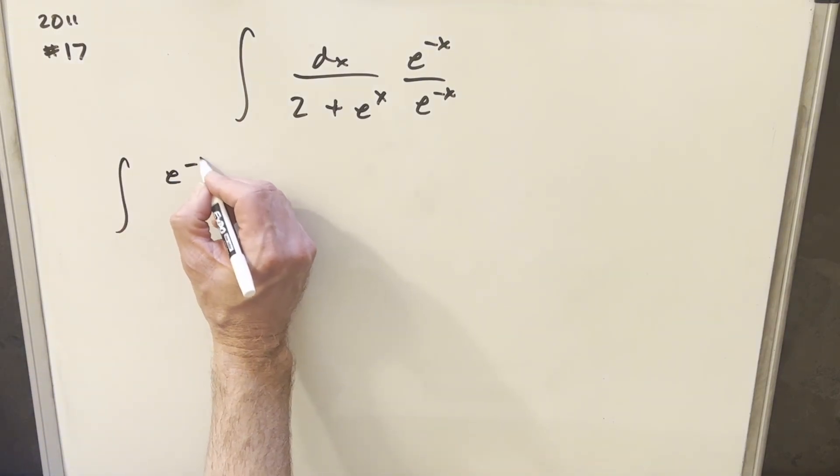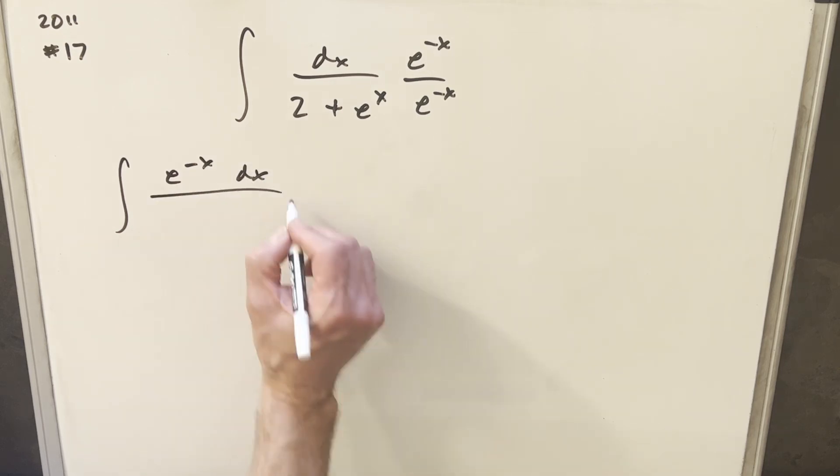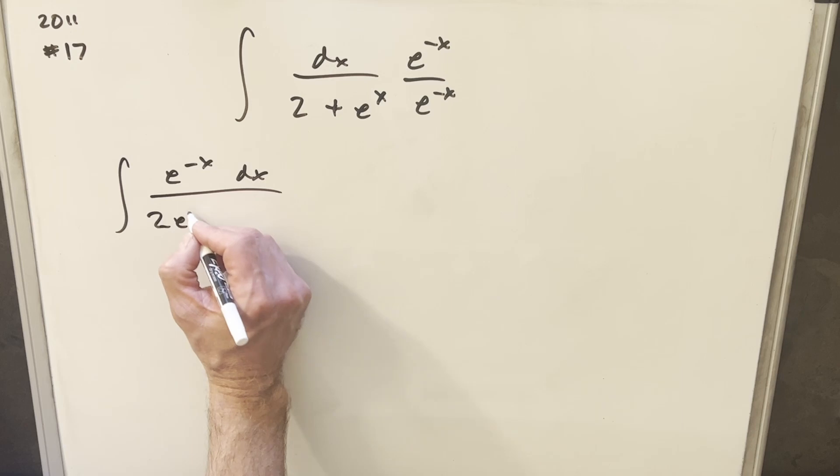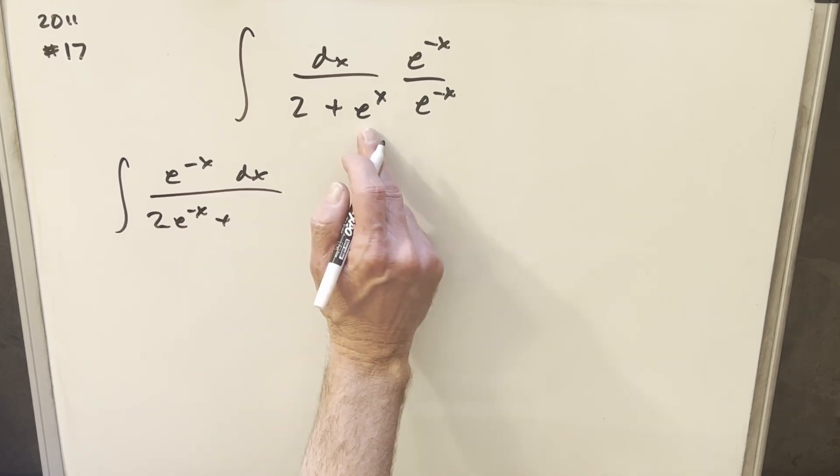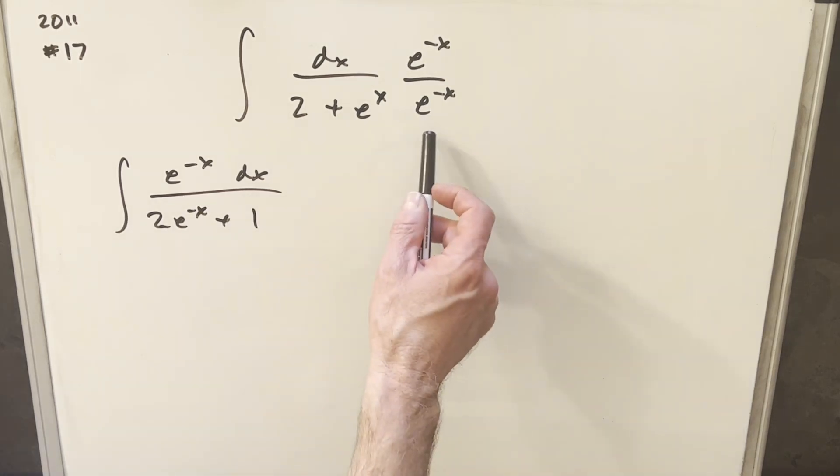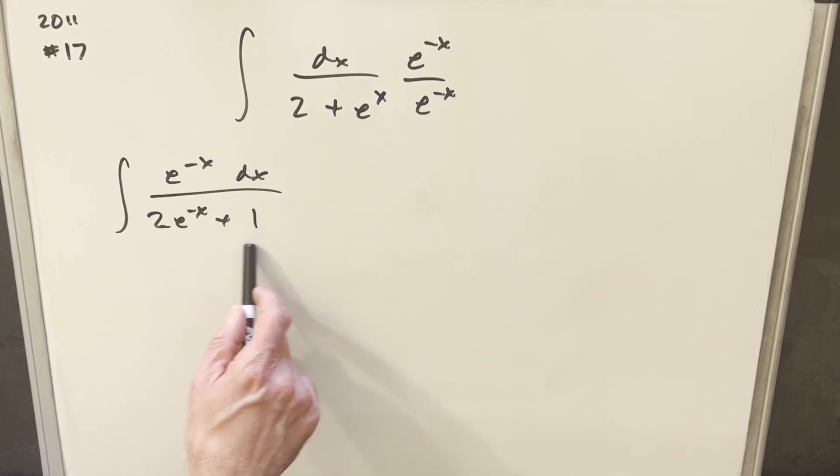So in the numerator, we're going to have e^(-x) dx, and in the denominator, we're going to have 2e^(-x). This term here multiplied becomes 1. I chose e^(-x) here because we don't want two exponential terms in the denominator. If it's just 1, it's going to work out nice for our u-substitution.